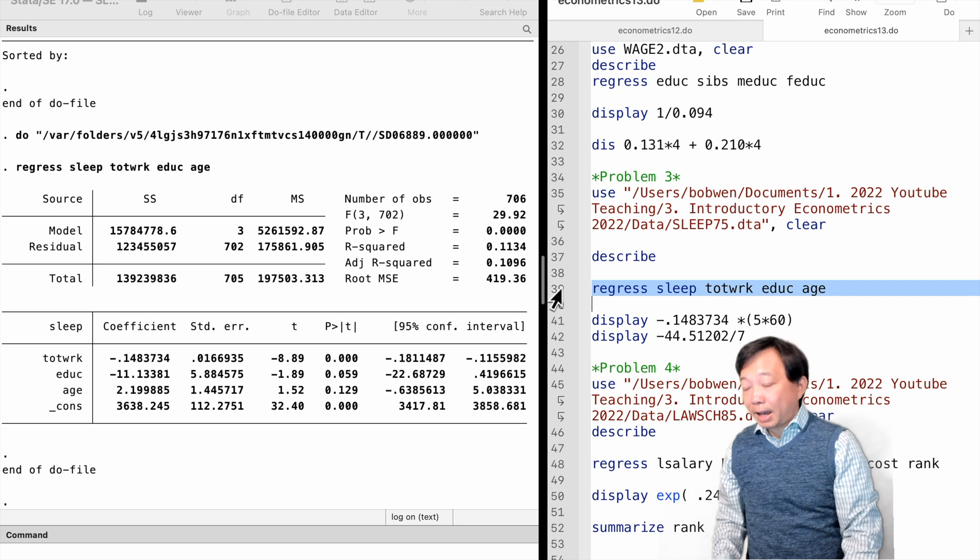When I look at the estimates, I find that beta 1 hat and beta 2 hat have the signs as expected, but beta 3 hat does not. However, beta 3 hat is not significantly different from 0 at the 10% level. In this model, age has no significant effect on sleeping time.